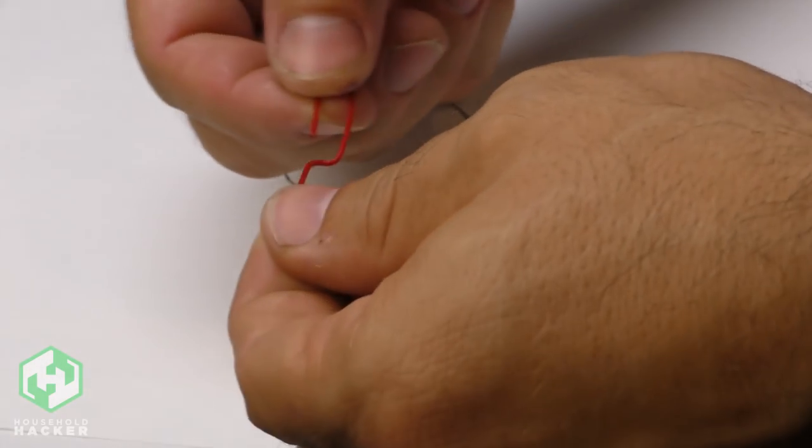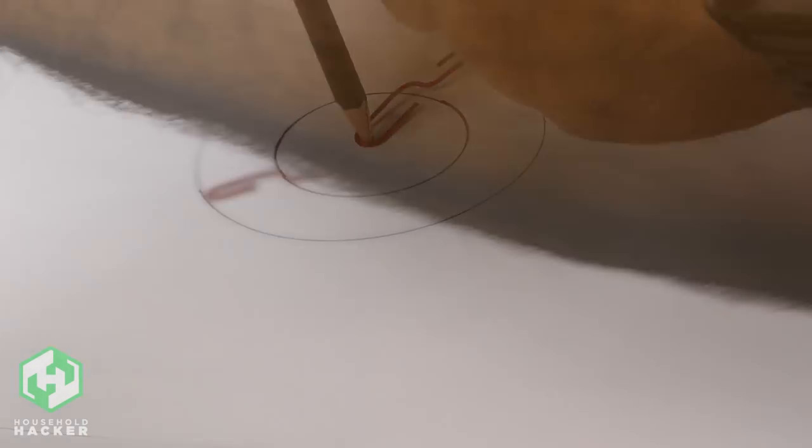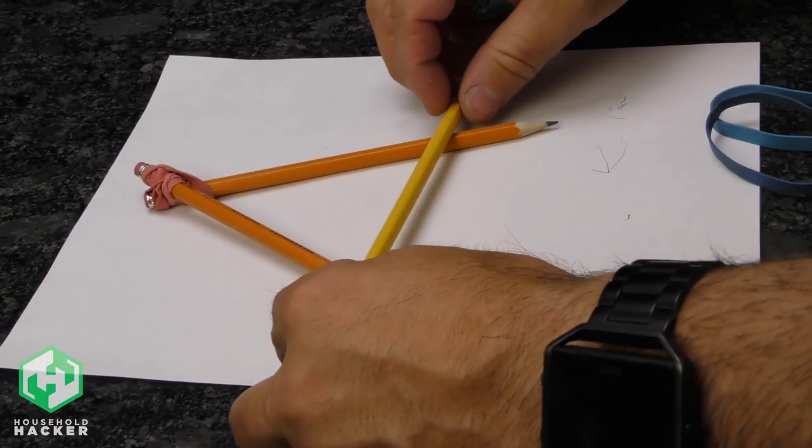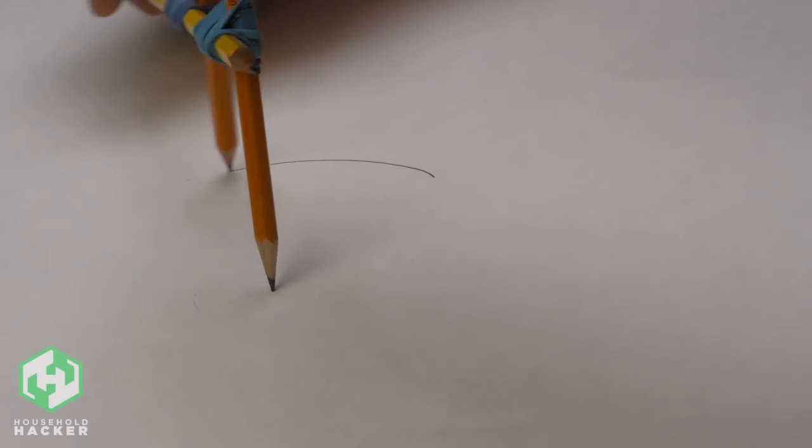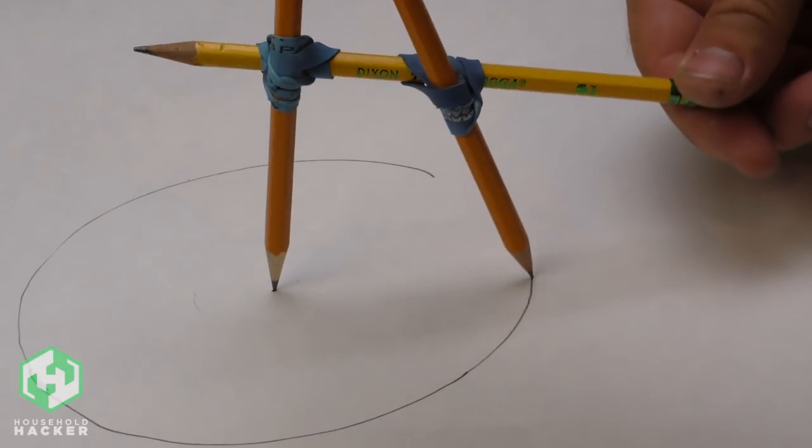For bigger circles, simply expand the paperclip and repeat the previous steps. If you need a specific diameter, use a third pencil and connect them with rubber bands to form a triangle. You can line the pencils up along a ruler and adjust accordingly to get your perfect circle with a precise diameter.